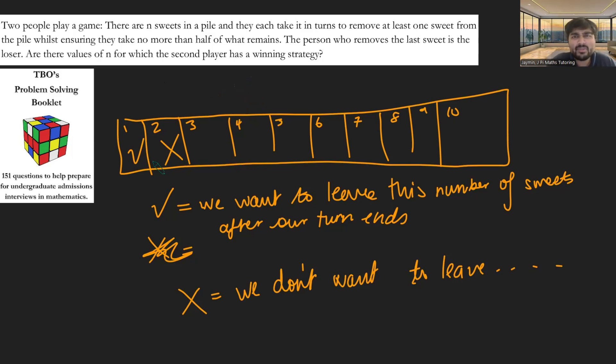What about three sweets? The answer is yes, because if we leave three sweets in the pile after our turn, it's going to be the opposition's turn next, and they'll have to take the third sweet. Because if there's three sweets left, they can only take one sweet, because half of three is 1.5. And then there'll be two sweets left, and it will be our go. If there are two sweets left and it's our go, we'll take that sweet. The other person will then be forced to take the remaining sweet. So three is a good square for us.